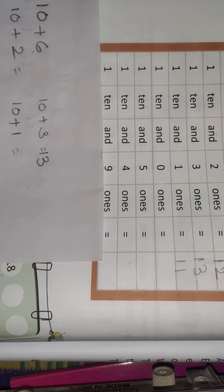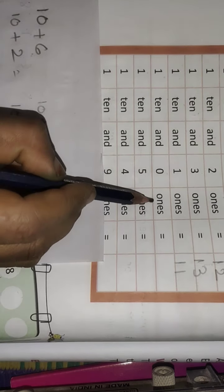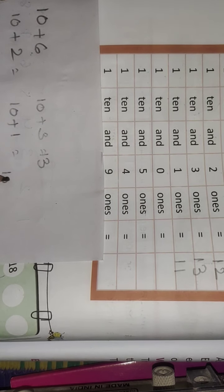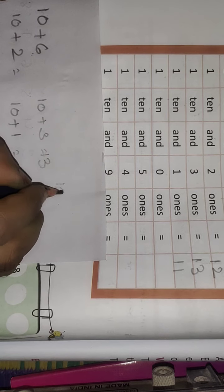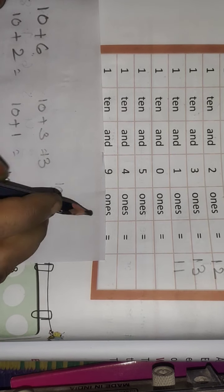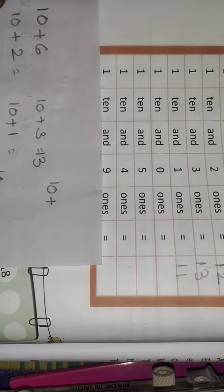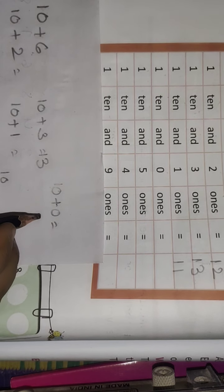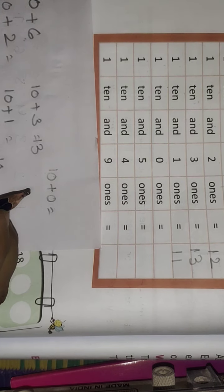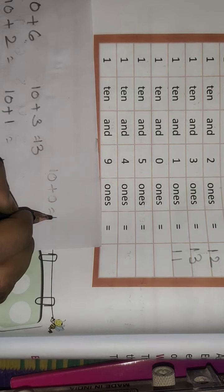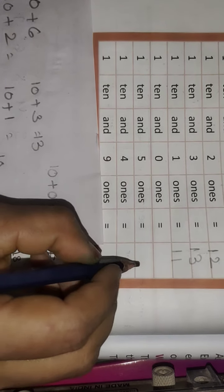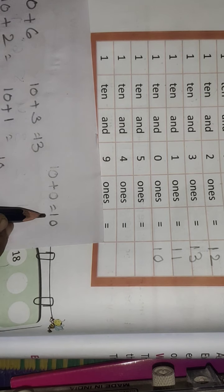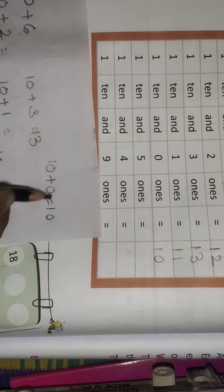Next — 1 ten and zero ones. 1 ten equals 10, 0 ones equals 0. 10 plus 0 equals 10. Answer is 10.